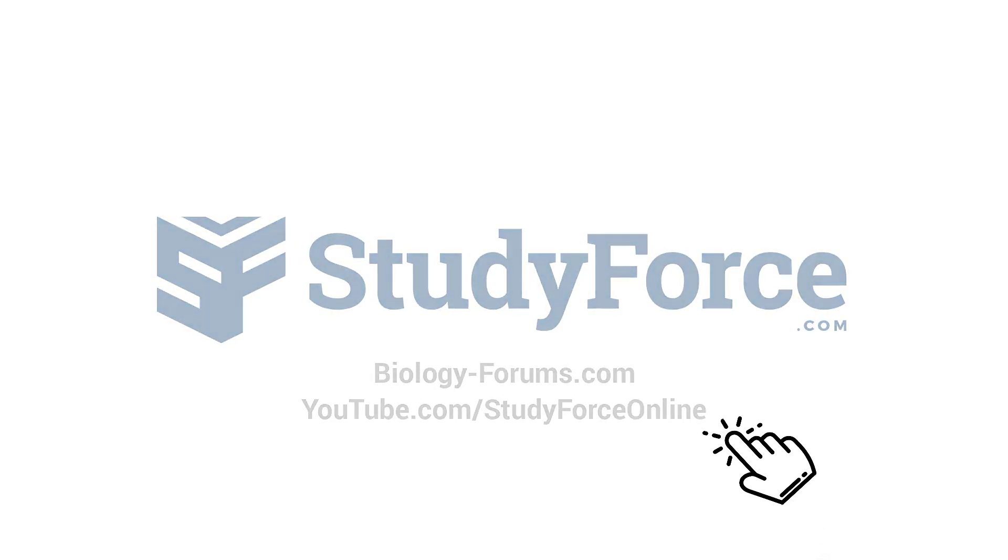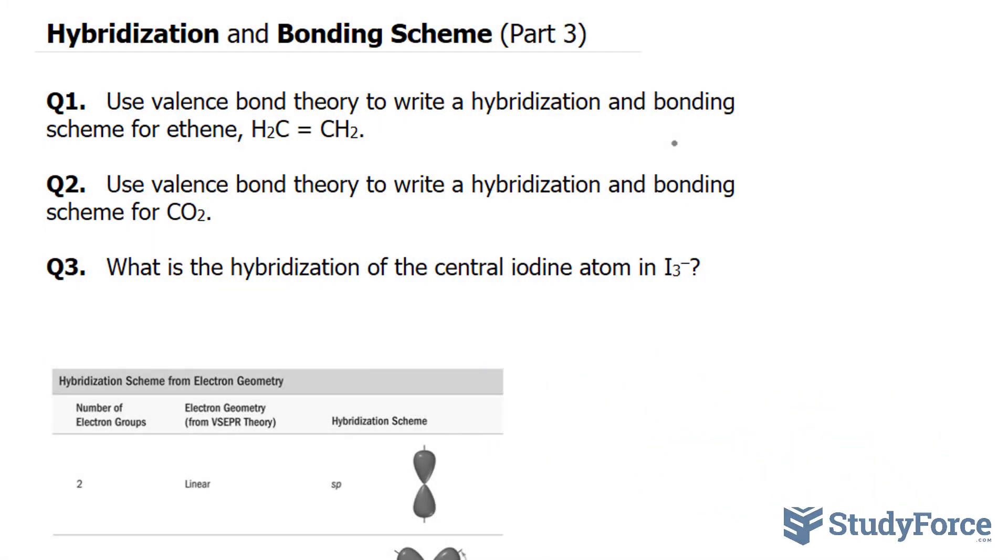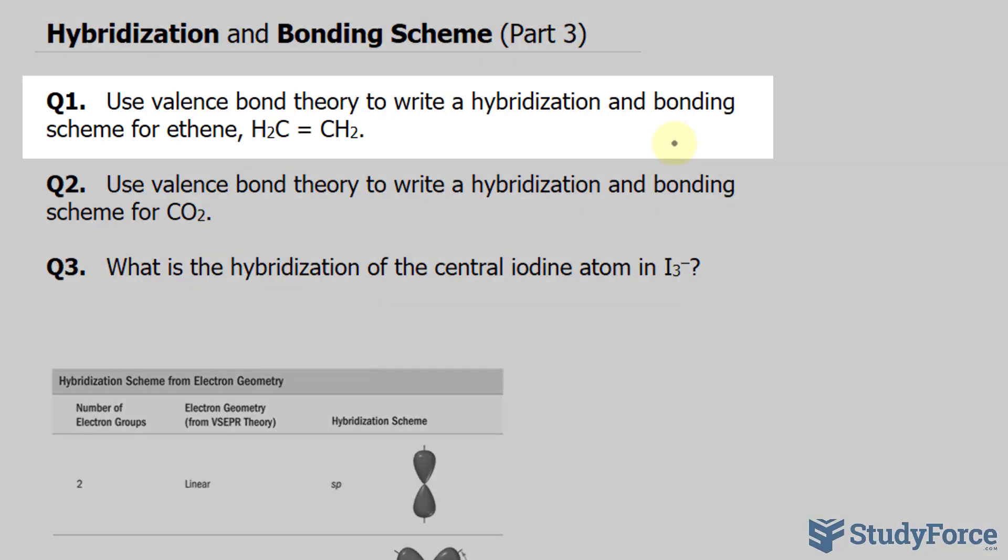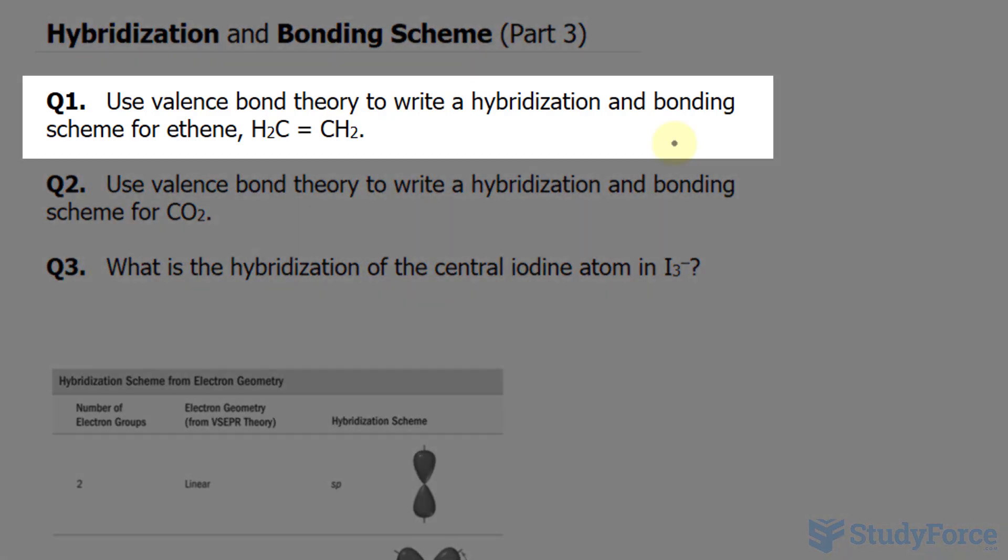In part three of the series where we discuss hybridization and bonding scheme, we have three more examples. For question number one, we have to use the valence bond theory to write a hybridization and bonding scheme for ethene, and it has the chemical formula shown on your screen.